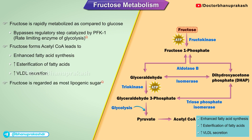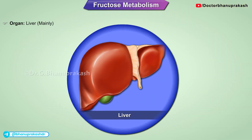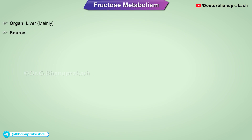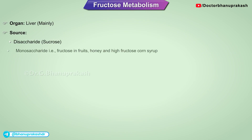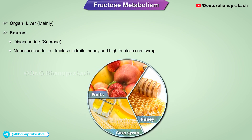So fructose is regarded as the most lipogenic sugar, primarily in the liver. Its dietary source as a disaccharide is sucrose, and as a monosaccharide it is found in fruits, honey, and high fructose corn syrup.